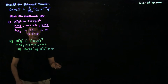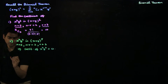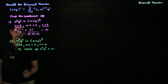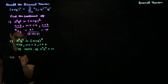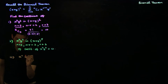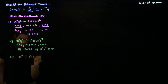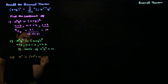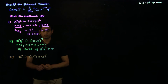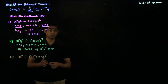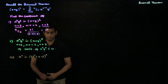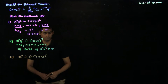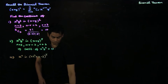Now let's look at a third example. This one is more complicated than the previous two. We're asked to find the coefficient of x^11 in (2x² + x − 3)^6. There are many ways to approach this problem, so let's look at three possible approaches.